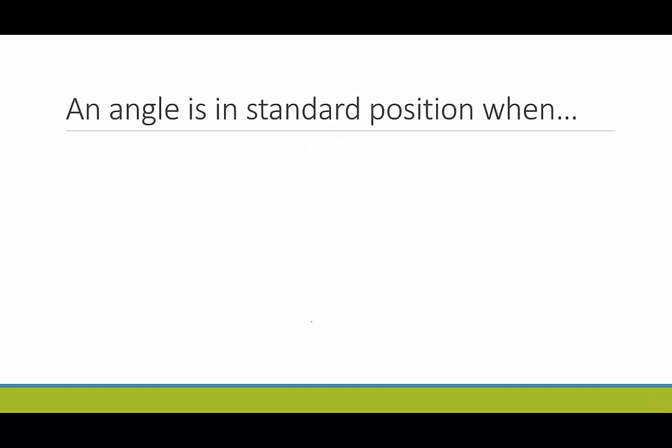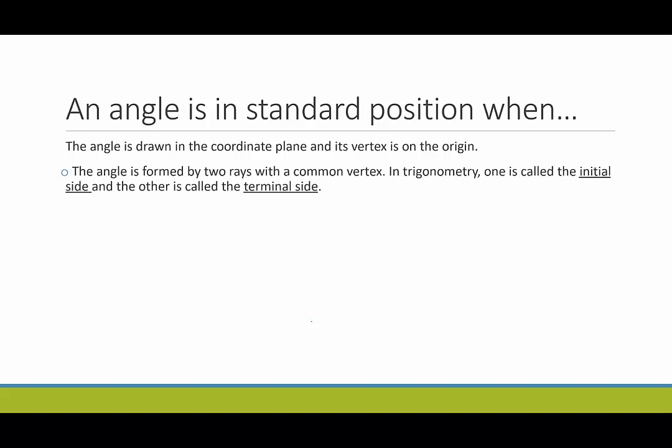First let's talk about angles in standard position. An angle is in standard position when the angle is drawn in the coordinate plane and its vertex is on the origin. The angle is formed by two rays with that common vertex, just like any other angle, but this vertex is on the origin.